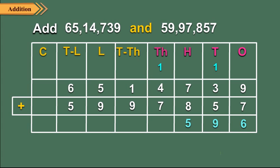Step 5: Now add the digits at the thousands place. 1 thousand carried forward, plus 4 thousands plus 7 thousands is equal to 12 thousands, which is equal to 1 ten thousand plus 2 thousands. So we write 2 in the thousands column and carry forward 1 to the ten thousands column.